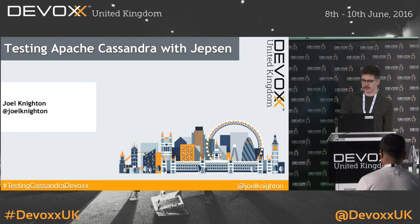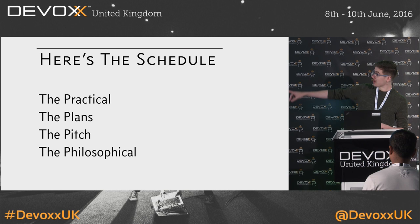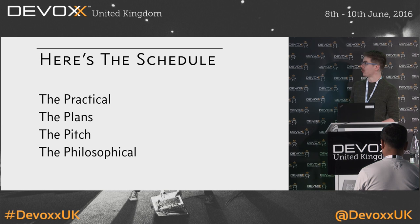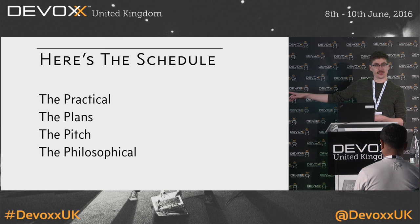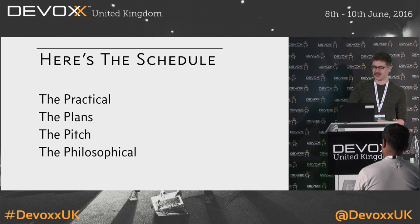Here's the schedule. First I'm going to talk about the practical — what we did, how we used Jepsen to test Cassandra, what we learned, what the results were. Then I'm going to the plans, where we look at how to incorporate what we learned from Jepsen testing into the regular development process of Apache Cassandra. Then we move to the pitch — why you should use Jepsen to test your distributed systems — and finally the philosophical, where I'll share thoughts on why this style of testing is so important.